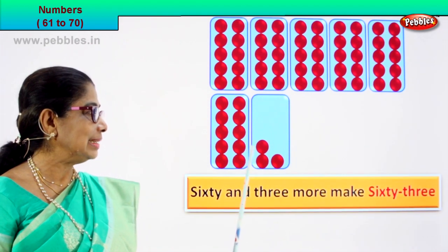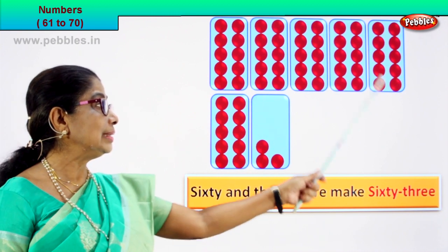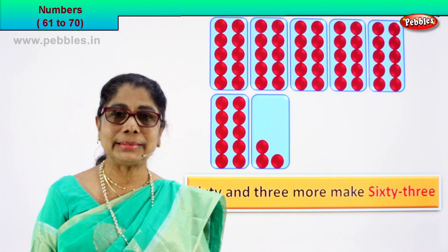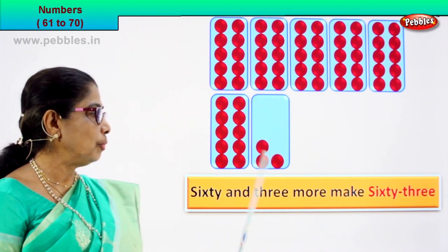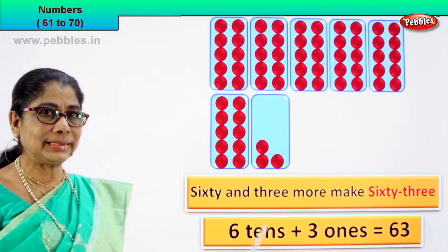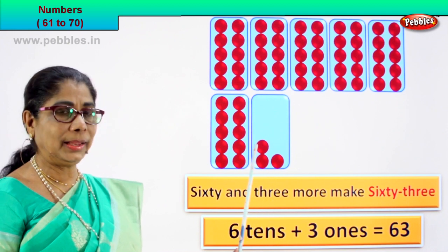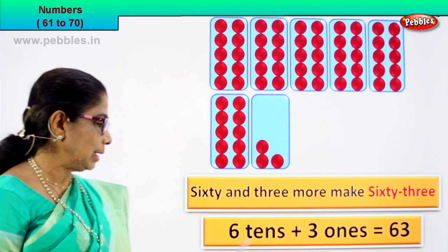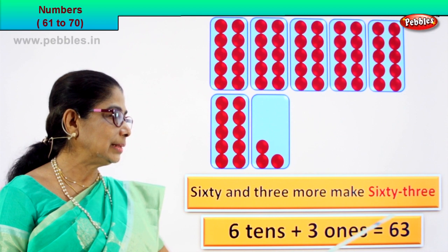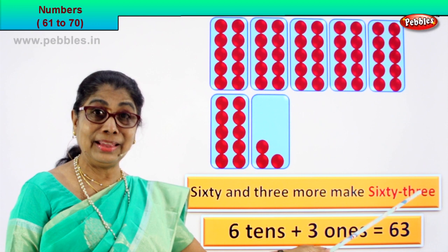That is six tens plus three ones is sixty-three. So we have sixty and three more make sixty-three. What is sixty? Six tens. Six tens plus three ones equal to sixty-three. The numeral is sixty-three. And its number name is sixty-three.